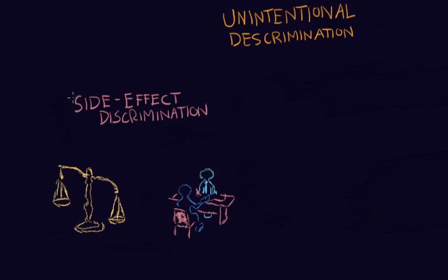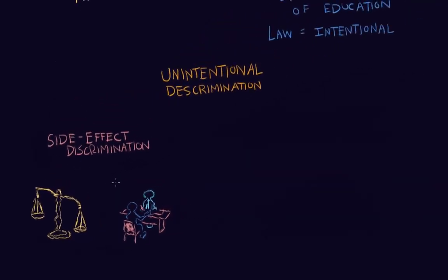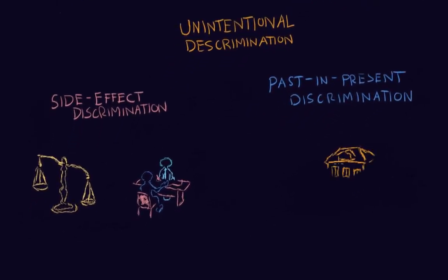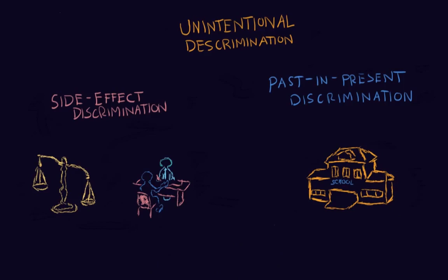This is side effect discrimination — it's unintentional. By the criminal justice system having reached an unjust verdict, the potential employer is swayed in an unfair way. That's one institution affecting another. A second way unintentional discrimination can occur is through something called past and present discrimination, which talks about how things done in the past, even though they may no longer be allowed, can have consequences for people in the present. An example would be Brown versus Board of Education.